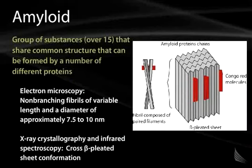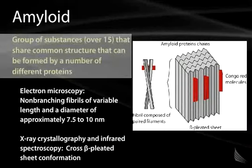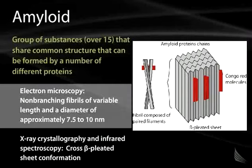The term amyloid actually refers to a group of substances — there are over 15 known — that share a common structure that can be formed by a number of different proteins. In electron microscopy, amyloid appears to be made up of non-branching fibrils of variable length, with a diameter anywhere from 7.5 to 10 nanometers.